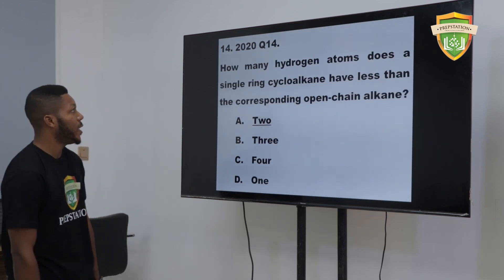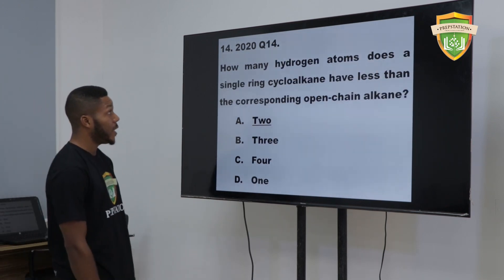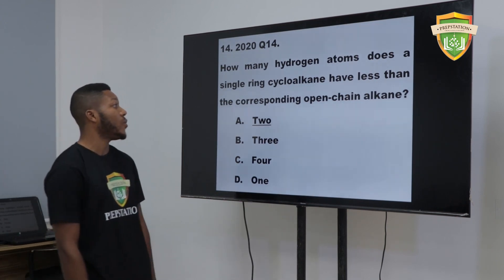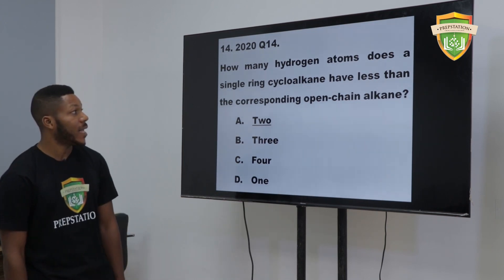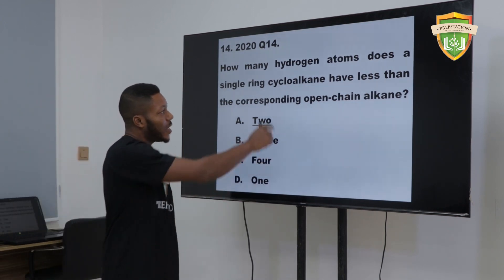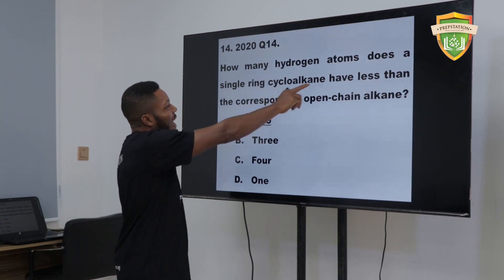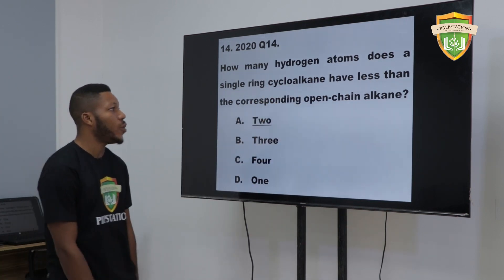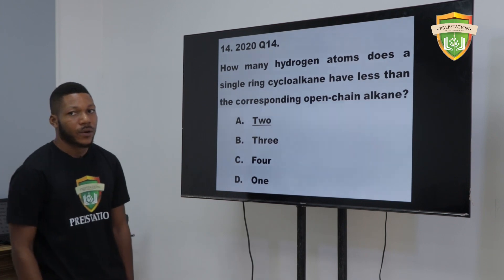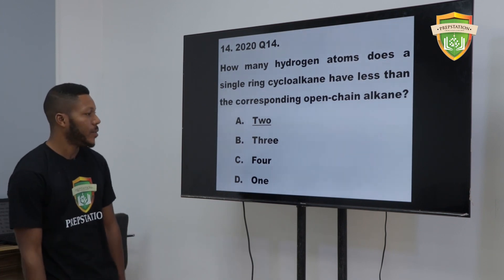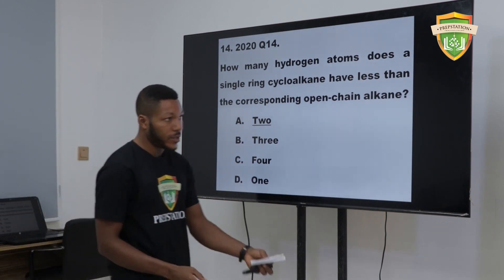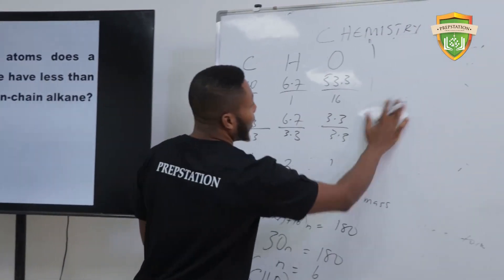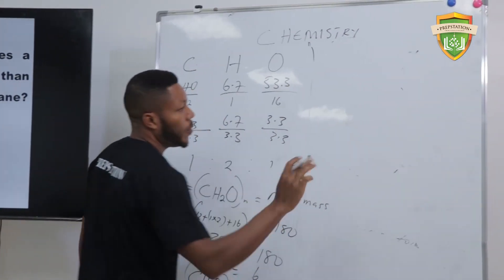Question 14 of the same year, 2020: How many hydrogen atoms does a single ring cycloalkane have less than the corresponding open-chain alkane? It's simple. Let me illustrate that before we proceed. For example, let's take propane.